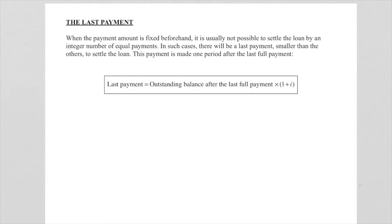In this lesson of last payment, we say when a payment amount is fixed beforehand, it is usually not possible to settle the loan by an integer number of equal payments. So not all payments will be equal. In such cases there will be a last payment smaller than the others to settle the loan. This payment is made one period after the last full payment. So how do we find this last payment? We work out the outstanding balance right up to the last full payment, and then we times it with one month compound interest to get the last payment. So let's now look at a problem and see how we're going to calculate this last payment.